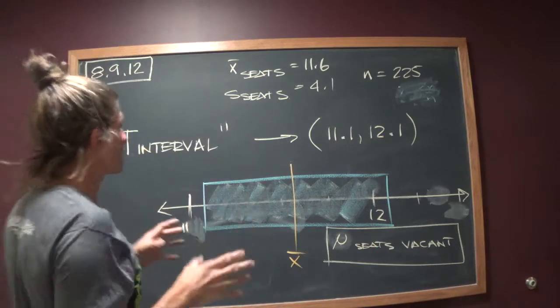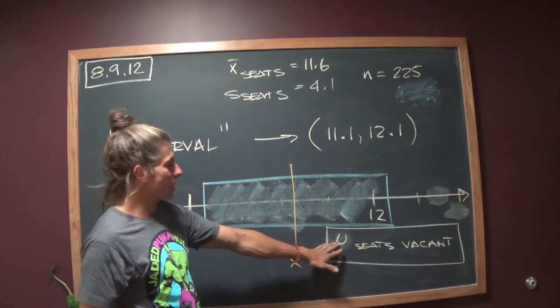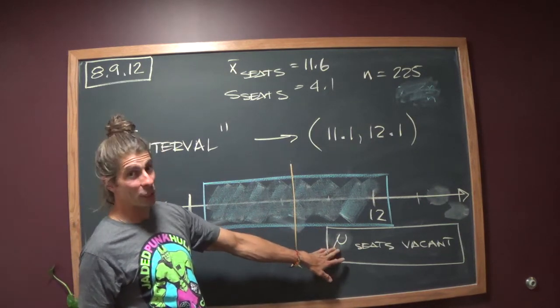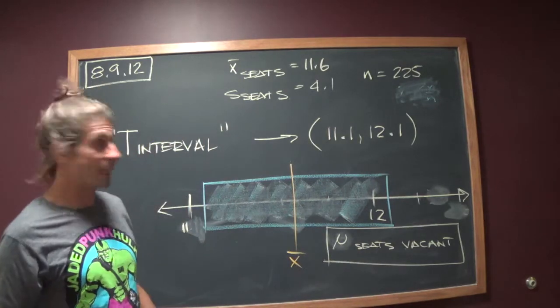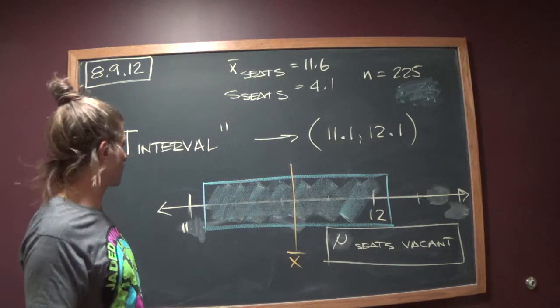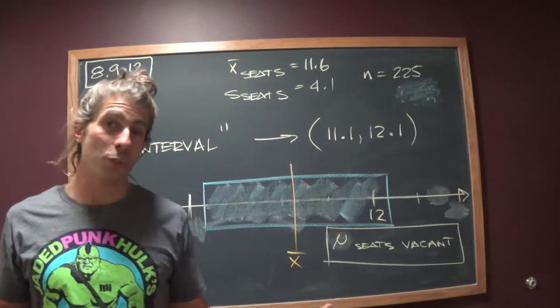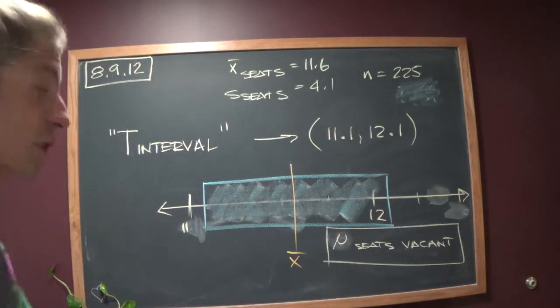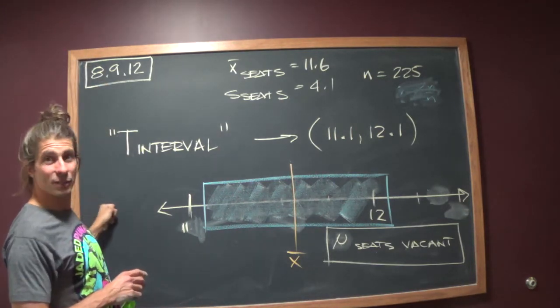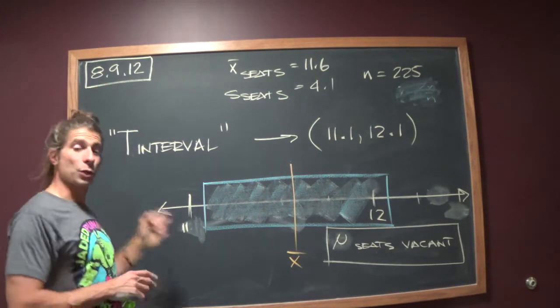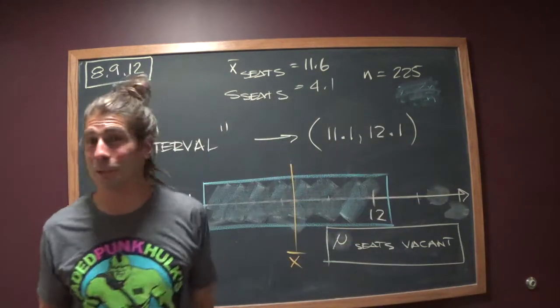So you can state that you are 92 percent confident that the average number, this is the population average, of vacant seats onboard one of this airline's flights is somewhere between 11.1 seats and 12.1 seats. That's what you can state. You can state that you're 92 percent confident that it's above 5, it's above 6, it's above 7. You're also 92 percent confident that it's below 15, below 16, below 17.